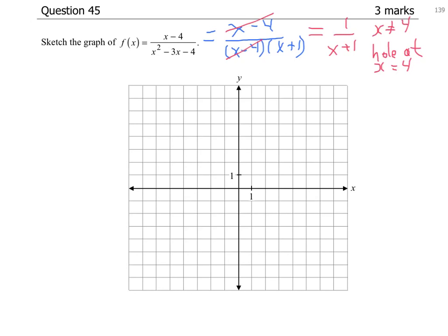So if we substitute that into the simplified form, we're going to get y equal to 1 over (4 plus 1), which is 1 fifth. So the hole has coordinates of 4 comma 1 fifth.